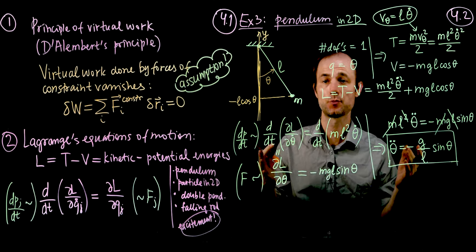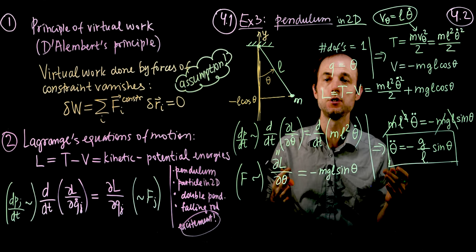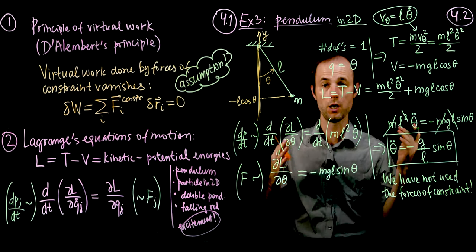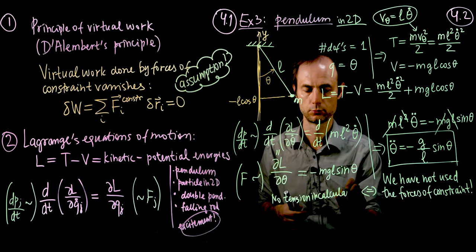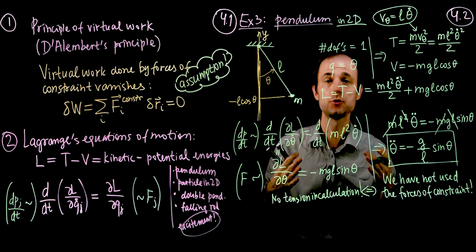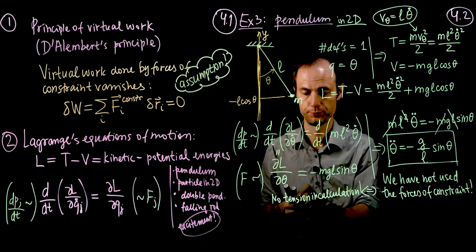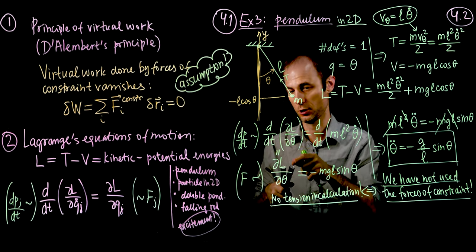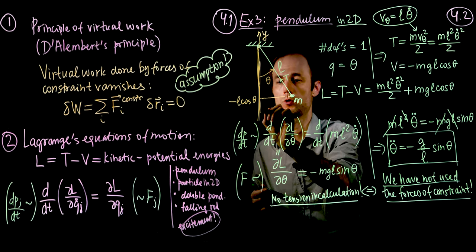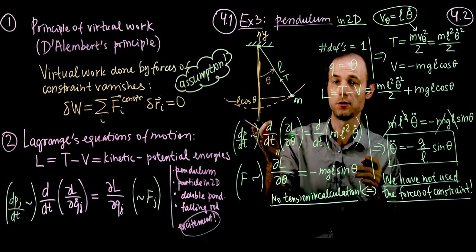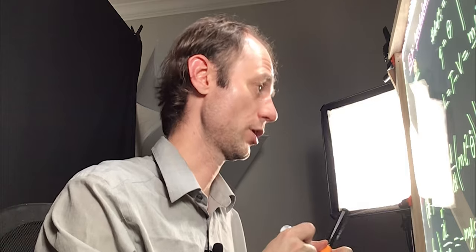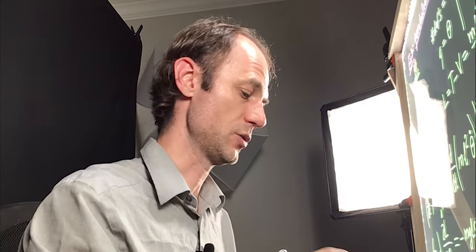What is amazing about this process is that nowhere did we need to use the force of tension — no tension in the calculation. We were able to do this because of D'Alembert's Principle. Indeed, the force of tension is perpendicular to the displacement. The virtual displacement can only point perpendicular to the rod itself, so the tension is perpendicular to the virtual displacement and cannot perform any work. Therefore D'Alembert's Principle applies.